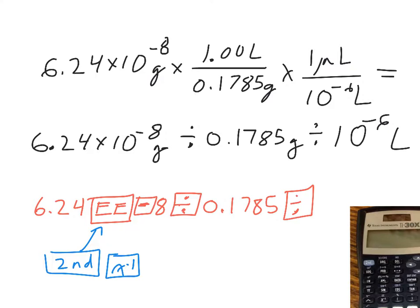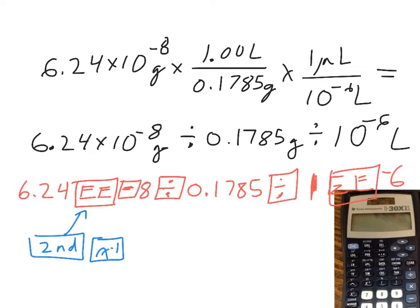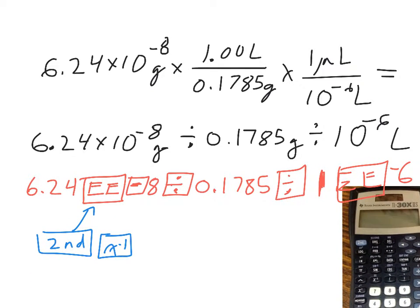Now, because that EE button puts in a times 10 for you, in order to get that 10 to the negative 6 in, you don't want to hit 10. You put 10 in there, you'll get an extra 10. So instead, I just put in 1, and then I go EE to the negative 6. If you punch that into your calculator, you'll get the right answer. Let me actually punch it in for you right now.